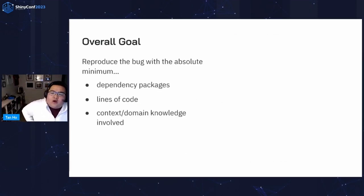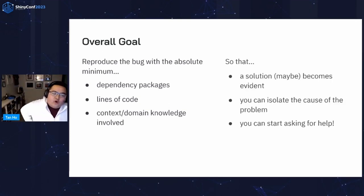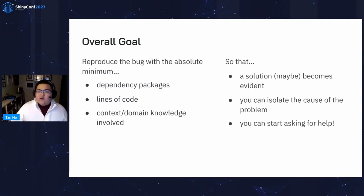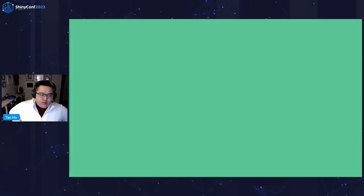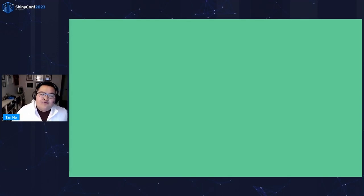The other approach is the other way: you start from scratch with the Shiny app snippet from RStudio and progressively add code. This is an approach I use more frequently with more complicated Shiny apps. You start with the base app and add back the bare minimum of pieces that will reproduce the problem. The overall goal is to reproduce the bug with the absolute minimum: minimum dependency packages, lines of code, and context and domain knowledge required. In doing so, either the solution suddenly strikes you, or you can isolate the problem code and start asking for help — it's much easier to explain your problem to a broader support group when it's self-contained.